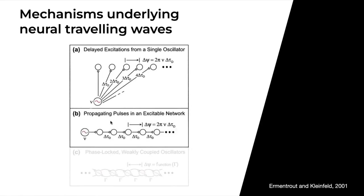In the second mechanism, we have propagating pulses in an excitable network. Here you have a similar oscillator that excites the neighboring entity, and this one excites the neighboring entity, and this one excites its neighbor in turn via conduction delays delta tau d. Here the activity propagates a pulse through the network. The phase shift can be described with the same formula as above. This is hypothesized to underlie the wave front in epilepsy, as well as the propagation of slow waves during sleep.